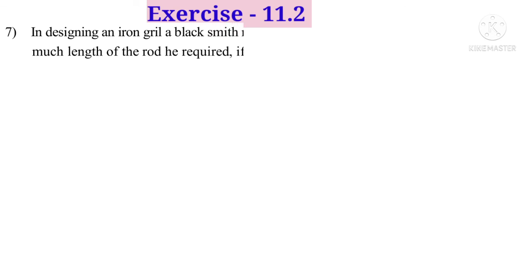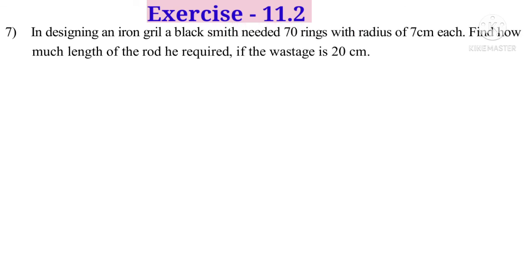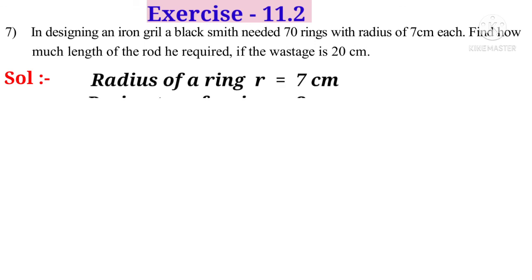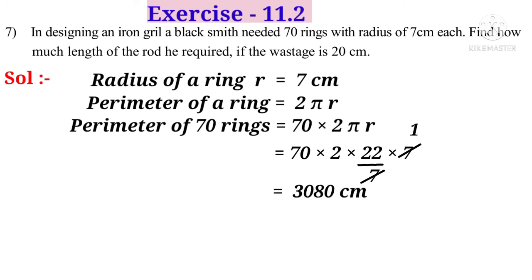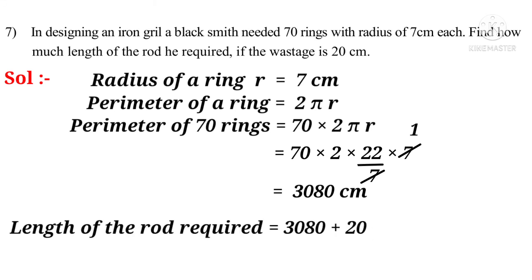Seventh problem: A blacksmith needs 70 rings of radius 7 cm each to design an iron grill. How much length of rod is required if the wastage is 20 centimetres? Solution: Circumference of one ring is 2πr equals 2 × (22/7) × 7 equals 44 cm. Total circumference of 70 rings equals 70 × 44 equals 3080 centimetres. Adding 20 cm wastage, the total length of rod required is 3080 + 20 equals 3100 centimetres.